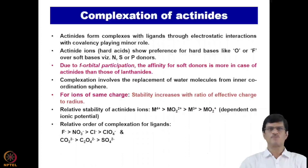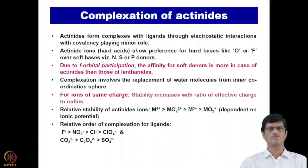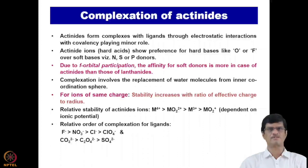Moving on to actinide ion complexation: mostly these actinides are hard acids because of their high charge, and they show preference for hard bases like oxygen or fluorine type donor atoms over soft bases such as nitrogen, sulfur or phosphorous donor atoms. Due to the f-orbital participation, the affinity for soft donors is more in the case of actinides than that of the lanthanides. This has been the basis of the separation of trivalent actinides from the trivalent lanthanides, which will be discussed in a subsequent lecture.